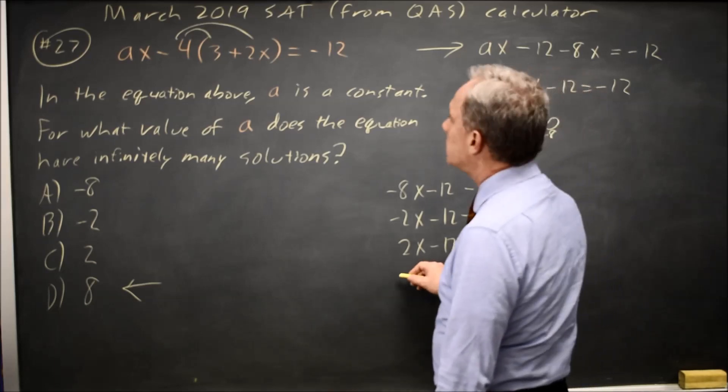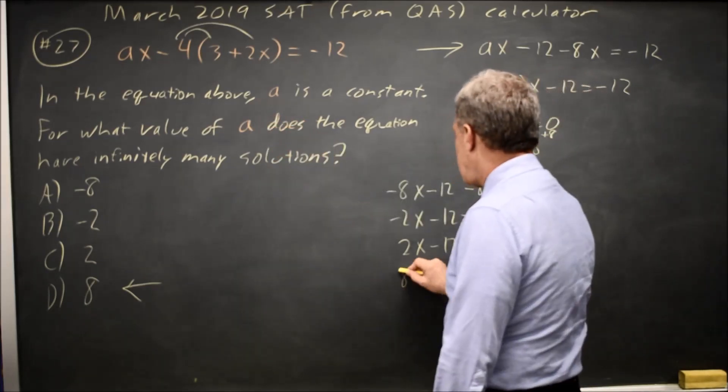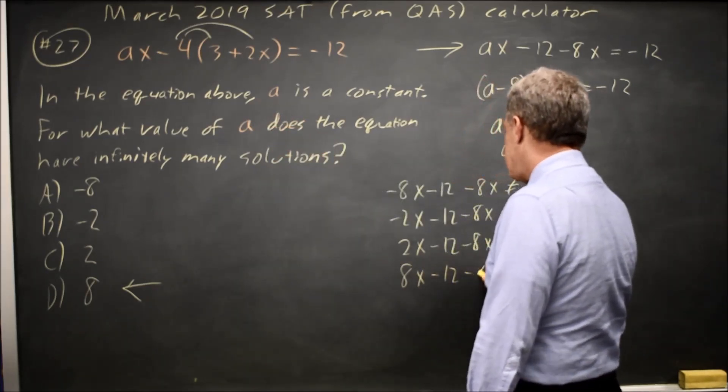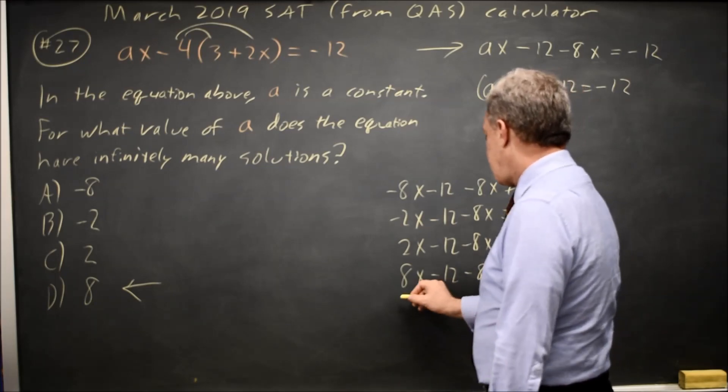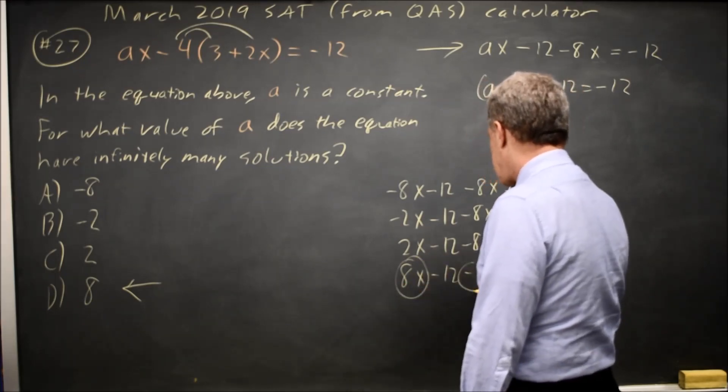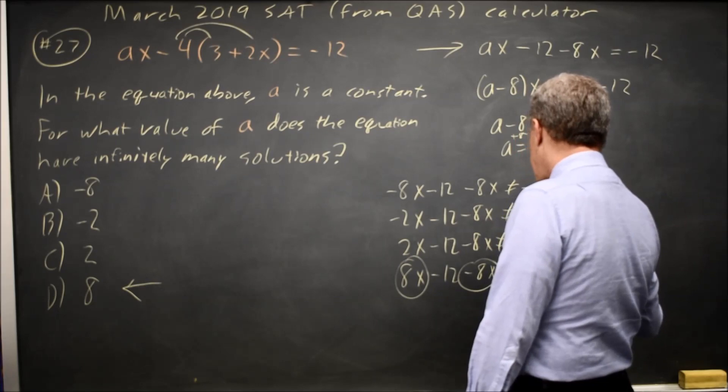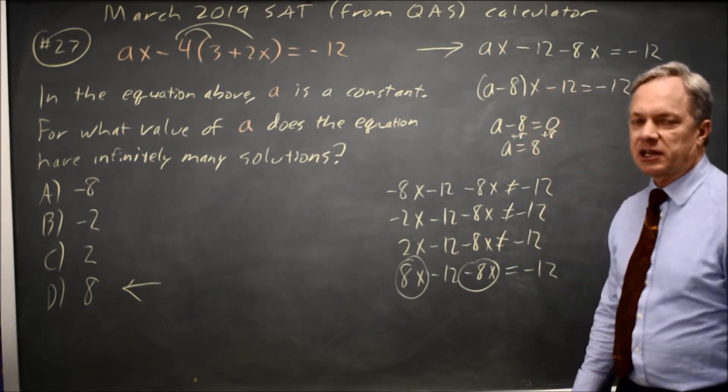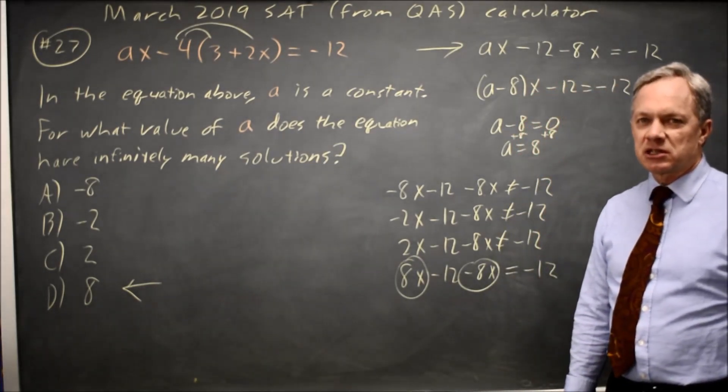How about choice D? AX becomes 8X and then minus 12 minus 8X, and 8X minus 8X is 0X. So that is negative 12. And just substituting in the answers, we do see that choice D is the correct answer.